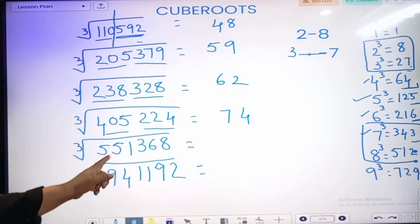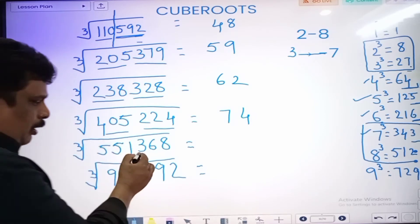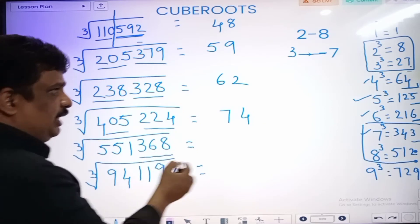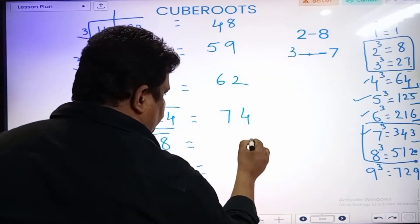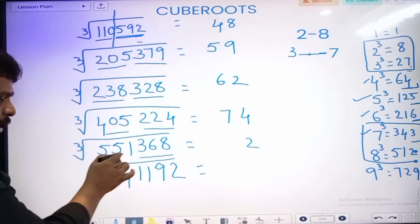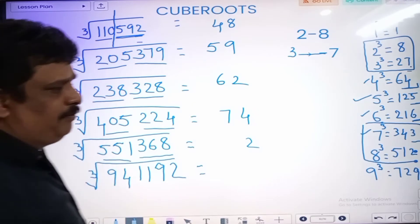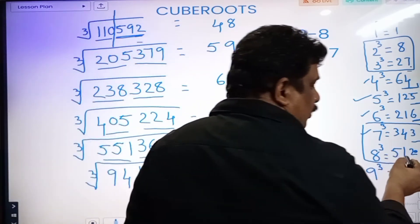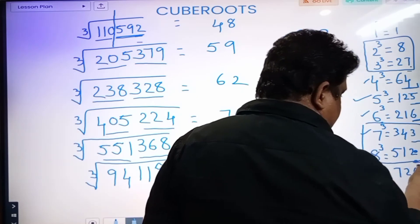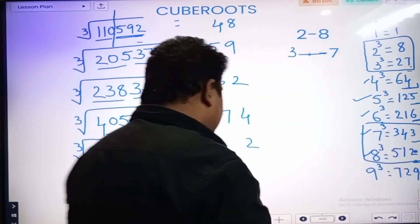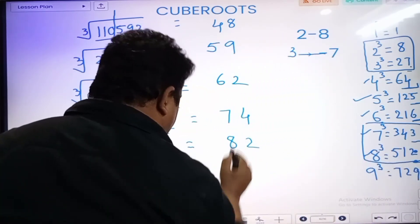Cube root of 551,368. 3 digits. Last digit 8. 8 was 2. So that's why, last digit 2. The remaining value: 551. 551. The nearest: 512, 729. In between. Then less value, that is 8. So 82.